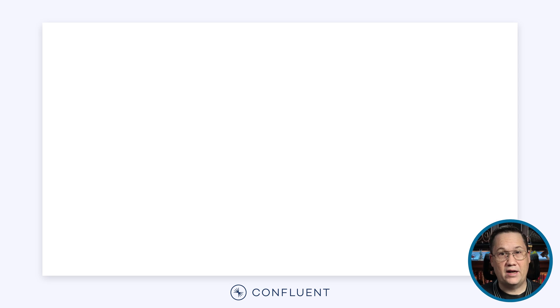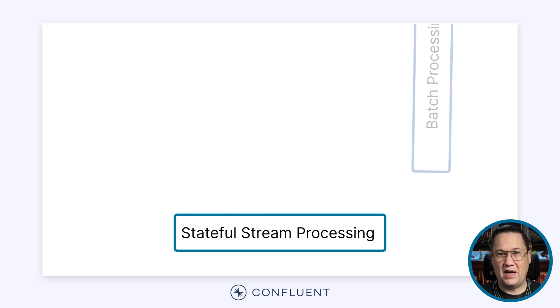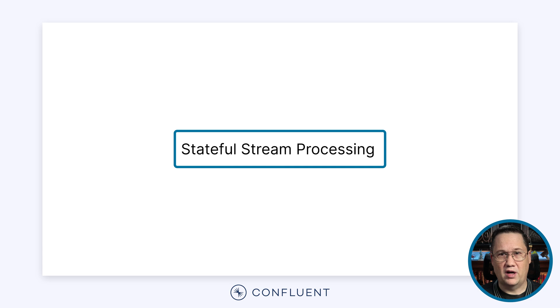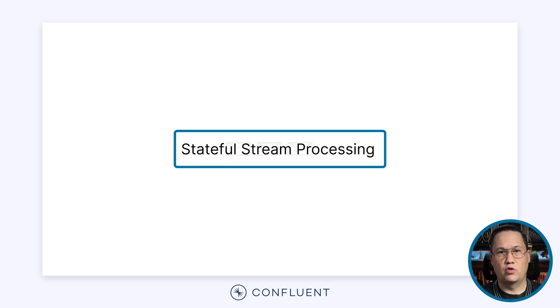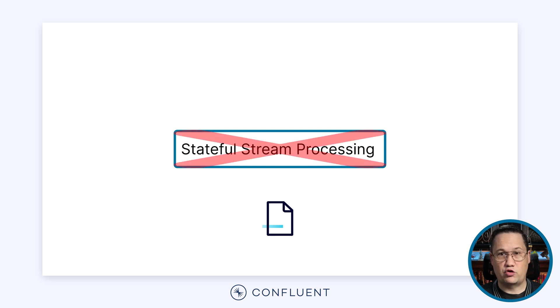Flink is a stream processing engine that supports two modes of operation. It can handle batch processing or stateful stream processing using the same API. Honestly, I'm done with batch processing and you probably should be too, so let's focus on stream processing. Stream processing takes an unbounded sequence of events and runs them through a pipeline, potentially emitting new events along the way. Each step can store state that can be retrieved by future events. In the event the stream fails, the state can also be used to recover the stream, which allows Flink to be resilient to failures.